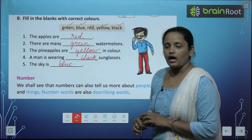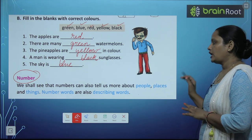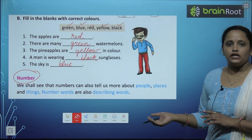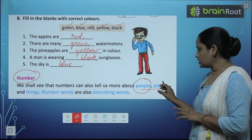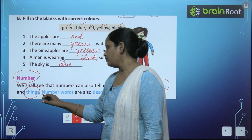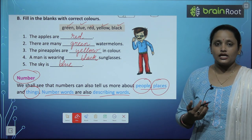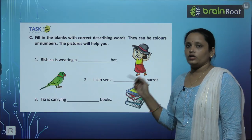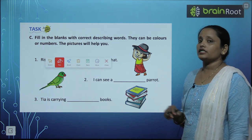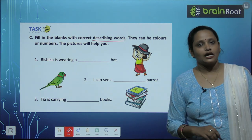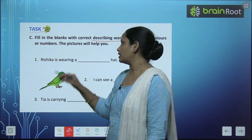Now let's learn about numbers. Numbers can also tell us more about people, places, and things. Number words are also describing words. Now let's do Exercise C. We have to fill in the blanks with correct describing words — they can be colors or numbers. The pictures will help you.